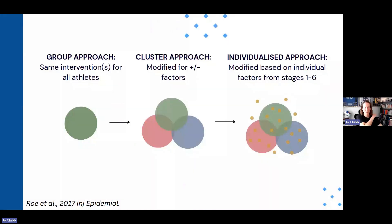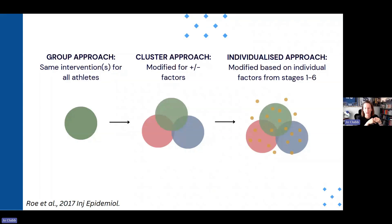That same paper from Mark Rowe illustrated this nicely in terms of thinking about your interventions across different levels of approach. Some athletes will receive a group approach — that might be a warm-up where everyone does the same thing. We then have a cluster approach where we might modify that, based on playing position — for instance, goalkeepers might have a different approach — or based on grouping from screening data, whether that's physical capacities or key injury risk work-ons. So you might have a hamstring group, a groin group, or an ankle group.